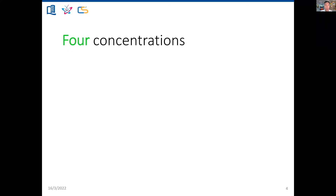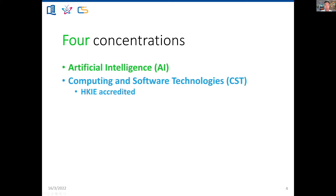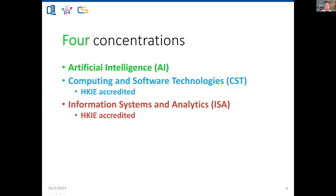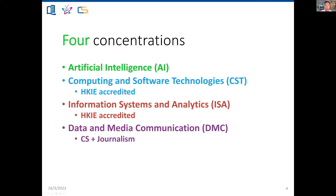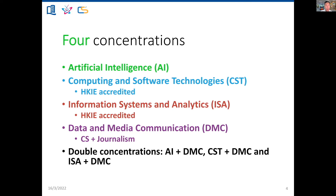Regarding specialized technological areas, students may choose their concentration of study. The first is AI. The second is Computing and Software Technologies. The third is Information Systems and Analytics. And finally, an interdisciplinary concentration. Interested students may also choose a double concentration.